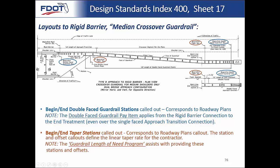Begin/end taper stations are called out and become more complex to calculate. Length-of-need calculations will be discussed in the IDS portion and the length-of-need program. Essentially you have four station and offsets — two for begin/end of guardrail and two for begin/end of taper — that define the entire segment for the contractor. When we show you the length-of-need program, you'll see how to come up with those four stations and offsets. The program will basically provide that for you.